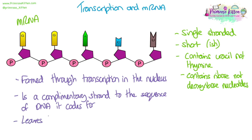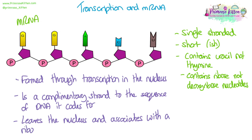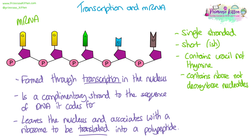It will be complementary to that section of DNA. It is formed in the nucleus but is able to leave the nucleus, and it will go and associate with a ribosome — meaning it will bind to a ribosome in the cytoplasm or on the rough endoplasmic reticulum. So mRNA is formed through transcription which takes place in the nucleus, and it goes to the cytoplasm to be translated into a polypeptide chain.